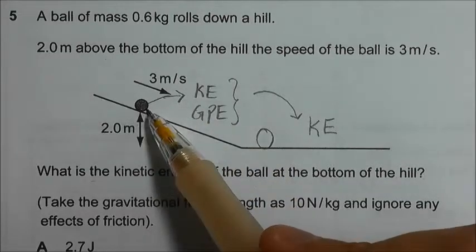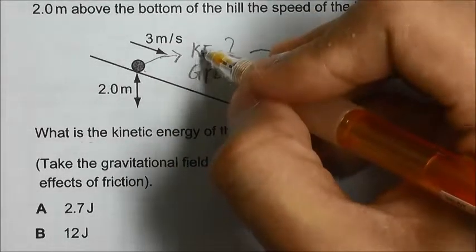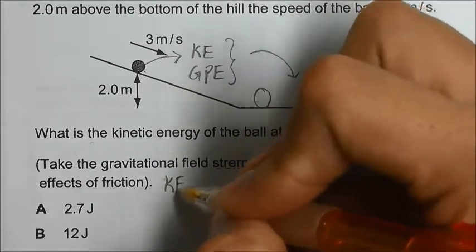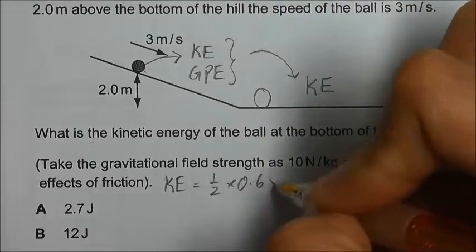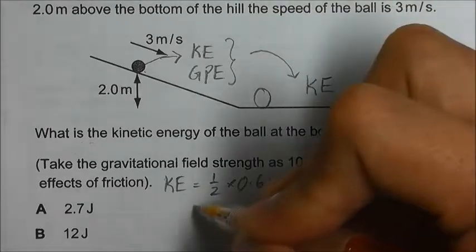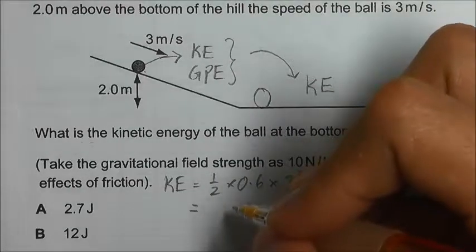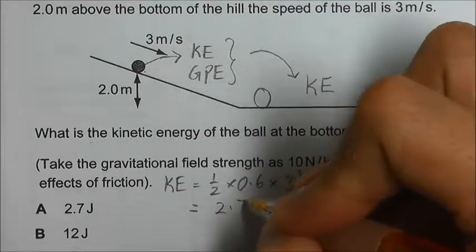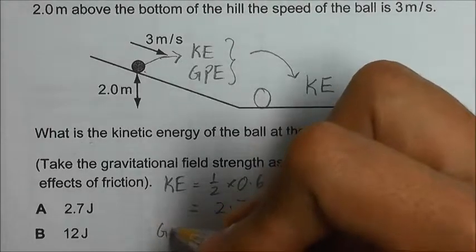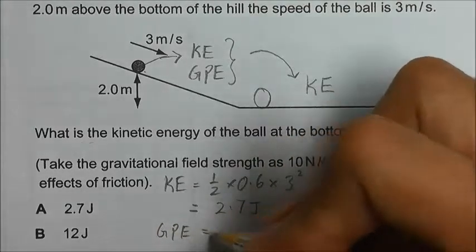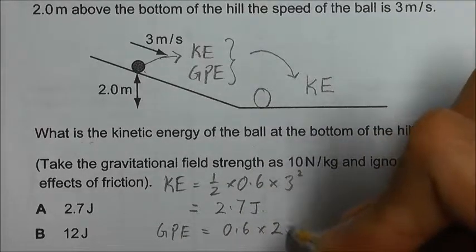mv squared—half times 0.6 times 3 squared—so we will get the answer as 2.7 joules. And the gravitational potential energy will be mgh, so it's 0.6 times 2 times 10,